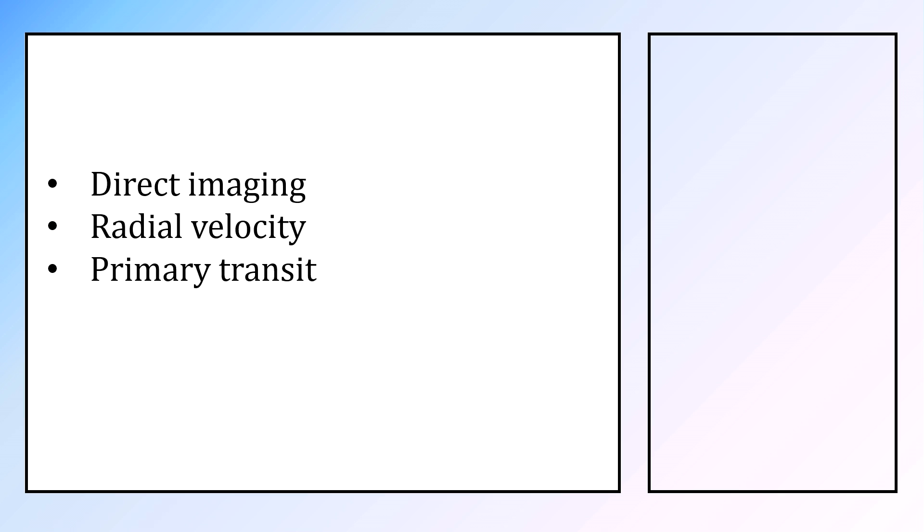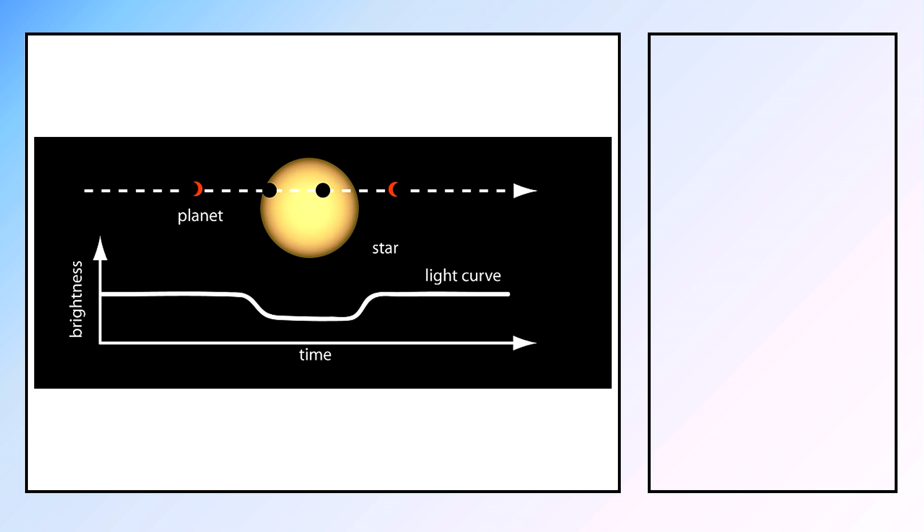To find these planets, several methods can be used, but most common is the primary transit method, where from Earth's perspective, a star dims a little due to a planet intercepting some of its light.